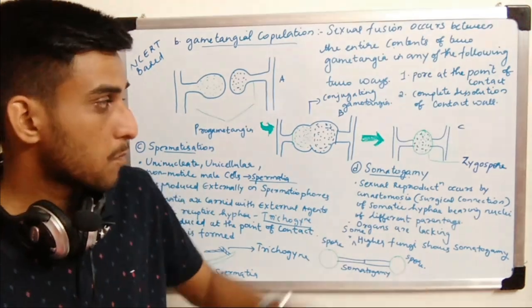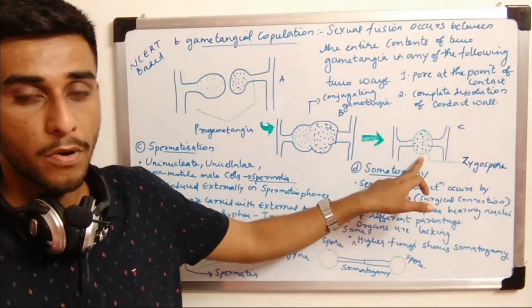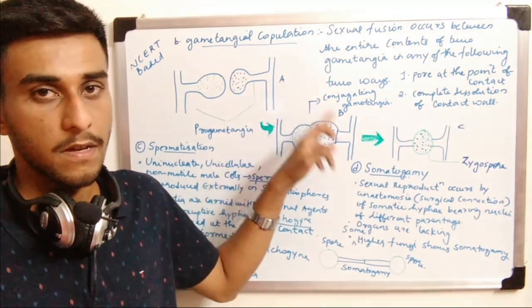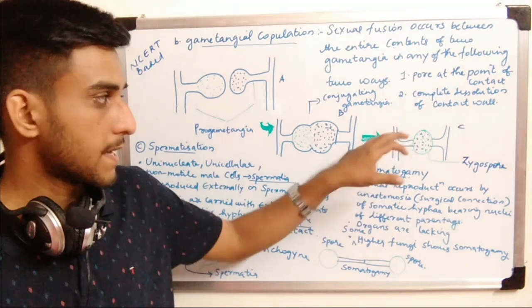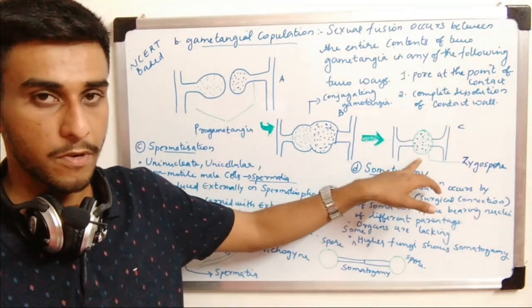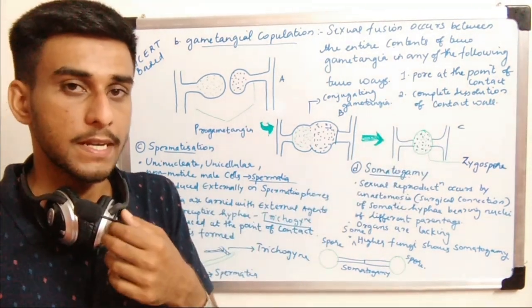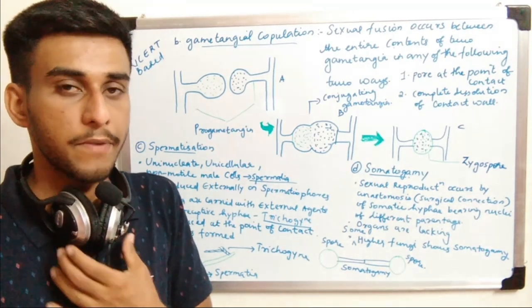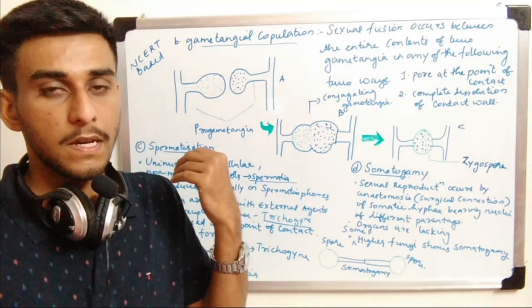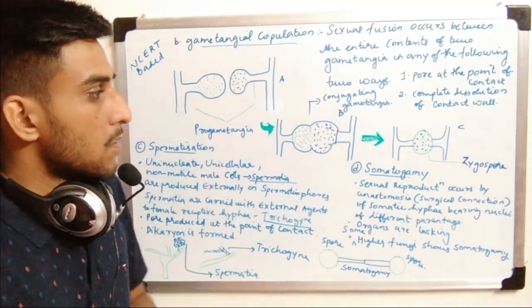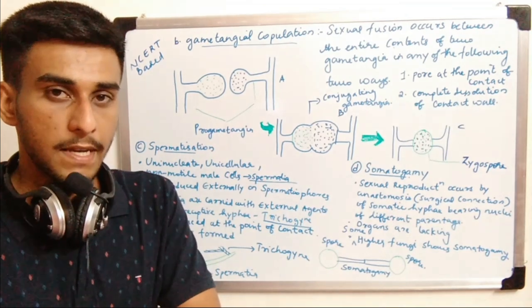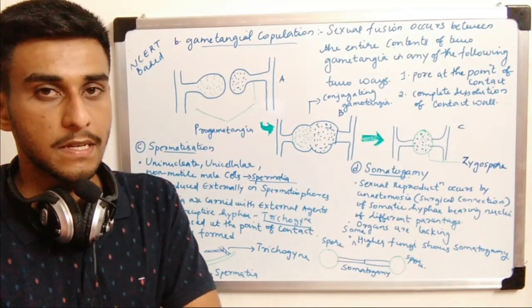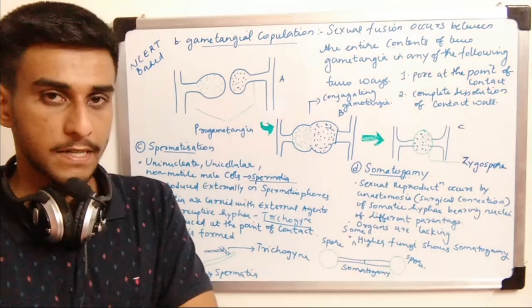In gametangial copulation, the spores sexually produced are haploid. The zygospore contains haploid nucleus because plasmogamy, karyogamy, and meiosis have all occurred. Spores are haploid in condition — meaning they have n number of chromosomes.